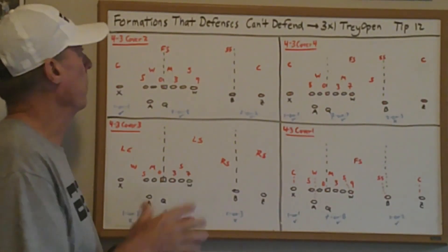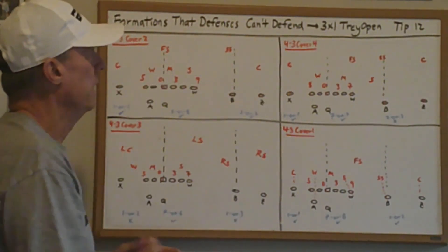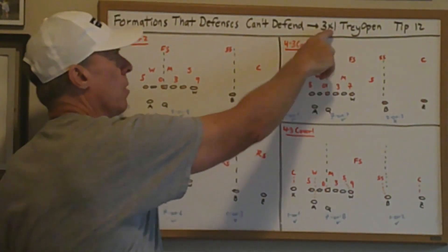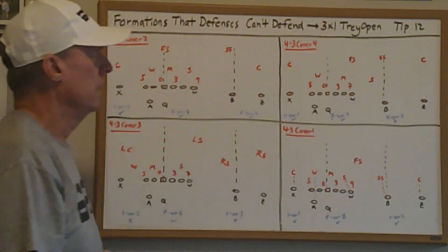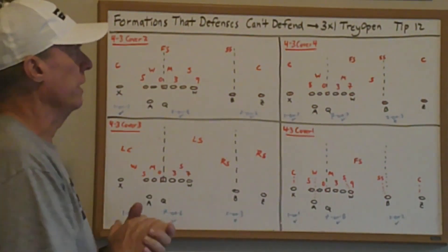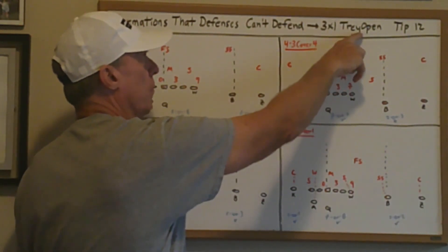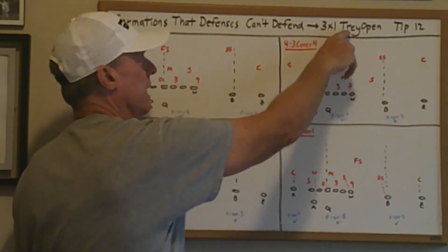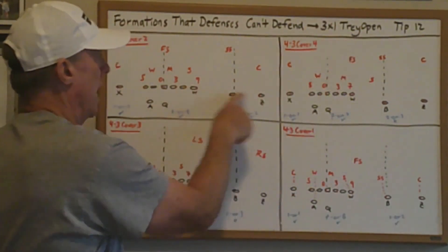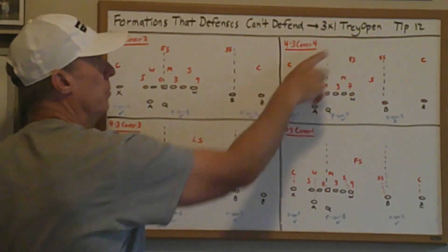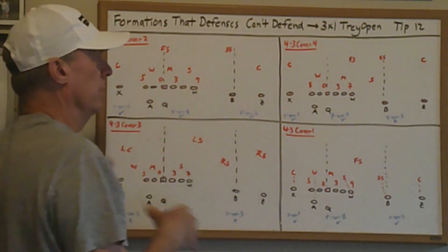Another formation that defenses can't defend is a three by one formation called Trey Open. The reason it's called Trey Open is that there's a Y — a tight end — in the formation, and Trey means three. So there are three receivers to a side with a tight end in that trips formation.